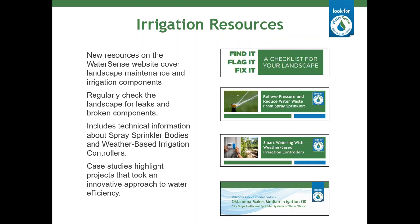A broken sprinkler in your system can waste 1,000 gallons of water per week, but fixing any issues can save you hundreds of dollars and thousands of gallons throughout the irrigation season. We've developed a checklist that can be used as a reminder to homeowners to regularly check for issues in their landscape, and flag any problems so that their irrigation professional can quickly identify and fix them. With Smart Irrigation Month coming up in July, it's a good time to look at our new mini reports for weather-based irrigation controllers and spray sprinkler bodies, and our latest case study features Oklahoma City reducing irrigation on medians and park strips using efficient sprinklers.